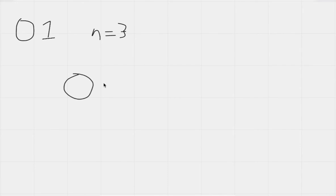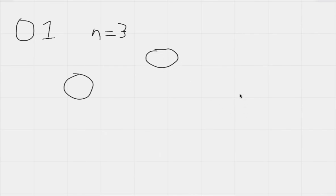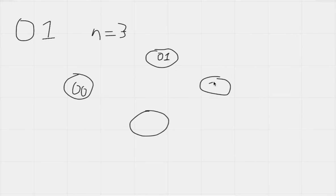We're going to fill these nodes with substrings of length n minus 1, which is 2. So the nodes are going to have: 0,0 — then 0,1 — then 1,1 — and then 1,0.